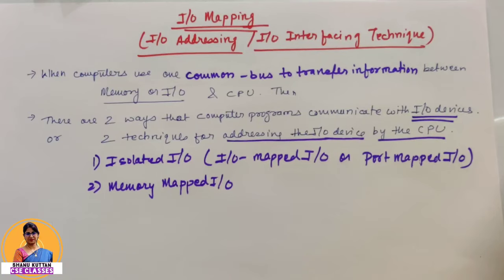When is this used and how does it work? When computers use common bus systems to transfer information between memory, I/O devices, and CPU, these techniques are used. Generally, there are two ways through which computer programs communicate with I/O devices.